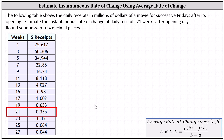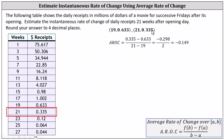Let's begin by determining the average rate of change from week 19 to week 21. We find the slope of the line passing through the points (19, 0.633) and (21, 0.335). The average rate of change equals 0.335 minus 0.633 divided by 21 minus 19, which simplifies to negative 0.149 million dollars per week. The revenue is decreasing by 0.149 million dollars per week on average over this interval.